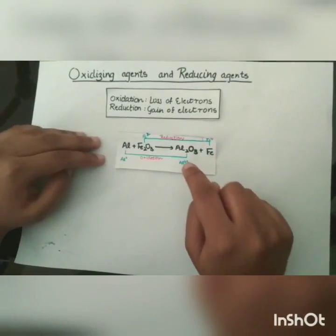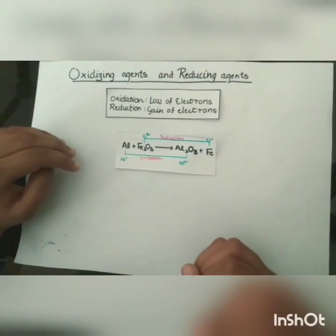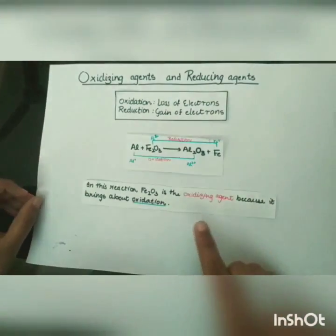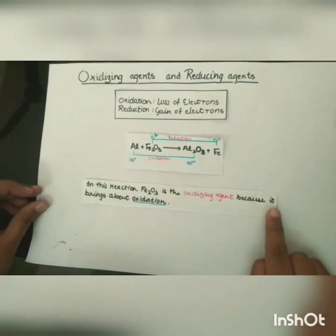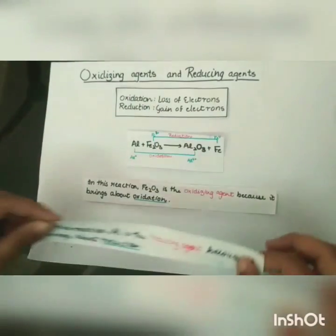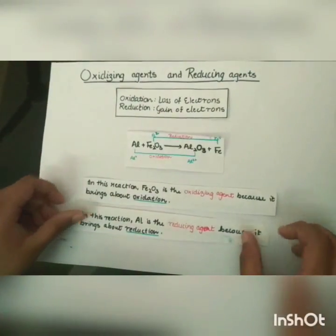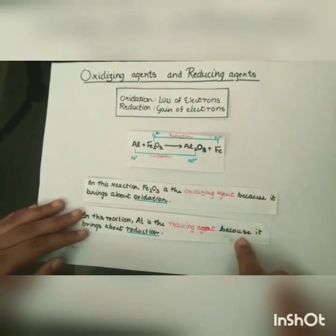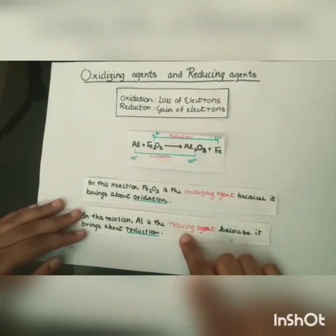Therefore iron has gained electrons — it has been reduced. In this reaction, ferric oxide is the oxidizing agent because it brings about oxidation. Similarly, aluminum is the reducing agent because it brings about reduction.